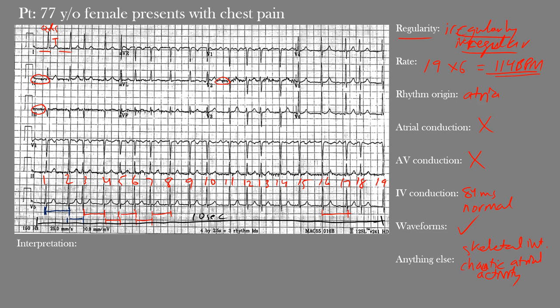So what is our interpretation? We have a fast, irregularly irregular rhythm with no clear, well-defined P waves along with normal intraventricular conduction. This is a case of atrial fibrillation with rapid ventricular response — AFib with RVR. It's rapid because the rate is above 100. It's AFib because we have no clear P waves and the rhythm is irregularly irregular. In conclusion, our 77-year-old female patient presenting with chest pain has an EKG showing AFib with RVR.